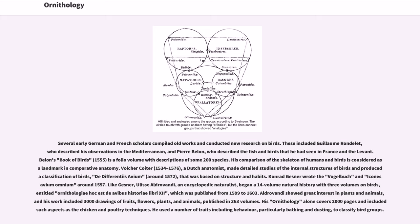Conrad Gessner wrote the Vogelbuch and Icones Avium Omnium around 1557. Like Gessner, Ulisse Aldrovandi, an encyclopedic naturalist, began a 14-volume natural history with three volumes on birds, entitled Ornithologiae hoc est de Avibus Historiae Libri XII, published from 1599 to 1603. Aldrovandi showed great interest in plants and animals, and his work included 3,000 drawings published in 363 volumes. His ornithology alone covers 2,000 pages and includes aspects such as chicken and poultry techniques. He used a number of traits including behavior, particularly bathing and dusting, to classify bird groups.